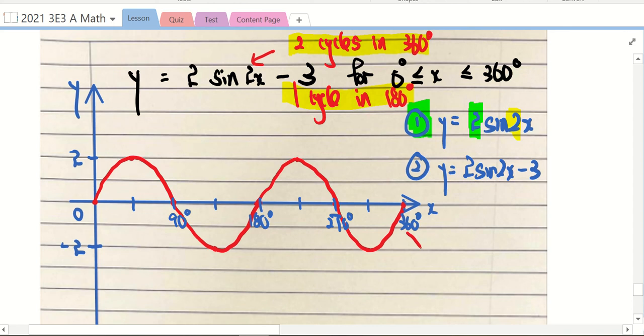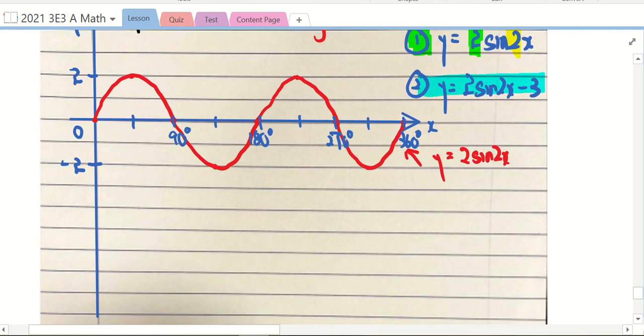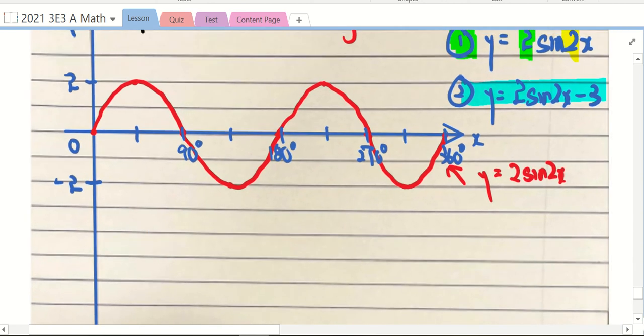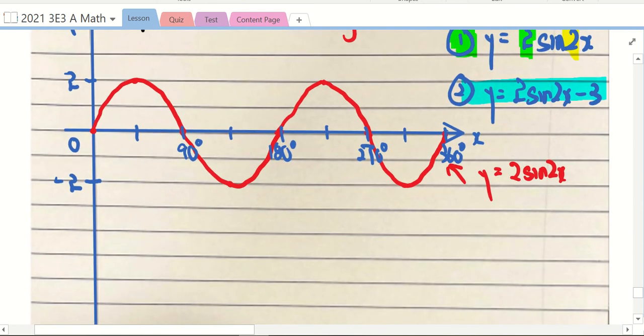Take note, this is for y = 2sin(2x). Now I'm going to do part two. Take a look carefully. Don't blame minus three. 'Oh teacher, what's the meaning of minus three?' Can you all recall? Shift down, move down by three units. So zero will become minus three.